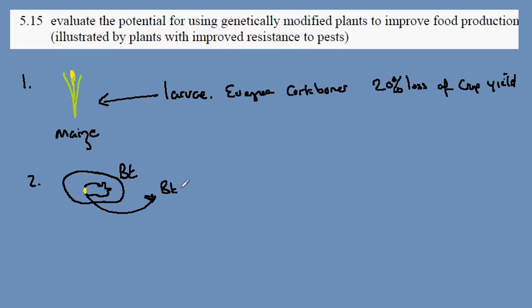This Bt toxin is known to kill the cork borer larvae. So the question is: what can we do to get this toxin into maize to protect it from the European cork borer?